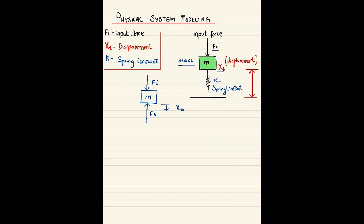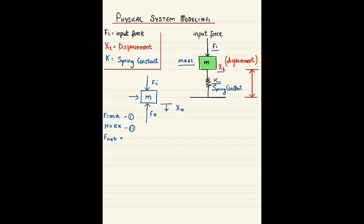Now we have to write down the equations required to draw the block diagram. The first equation is our force equation: F equals ma — let's call this equation one. We also have the spring constant k from Hooke's law for simple harmonic motion: fk equals kx — equation two. The third equation is the total force (f_net) acting on this mass, where we have two forces: fi and fk.